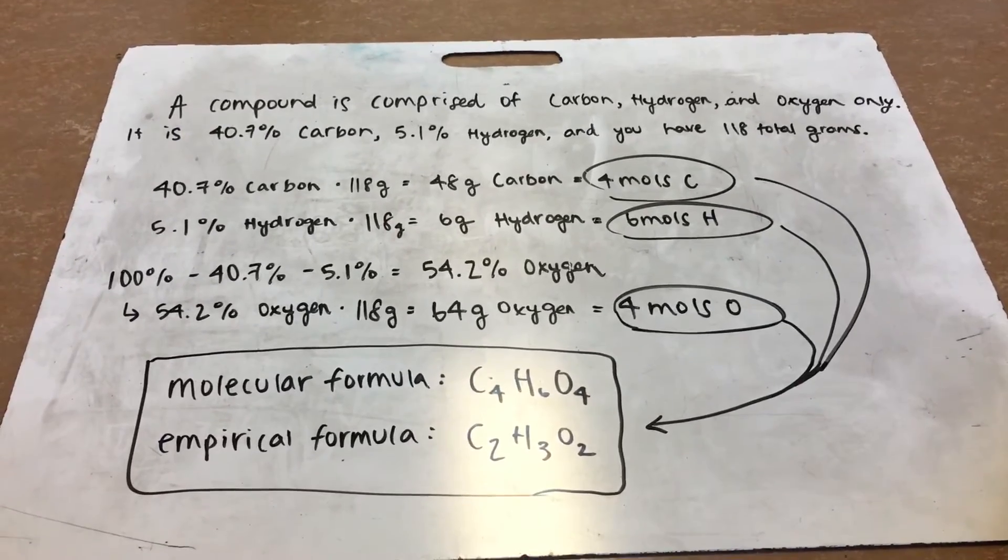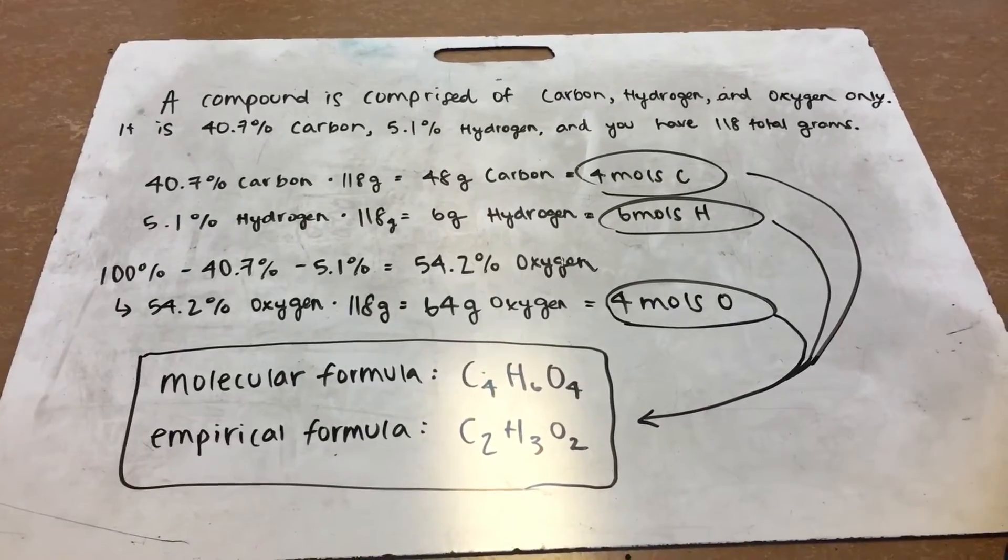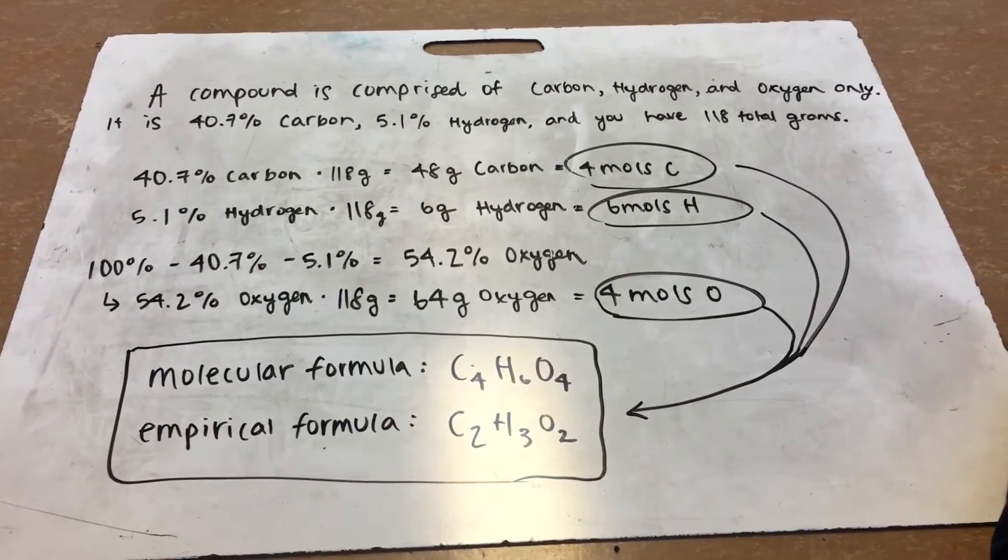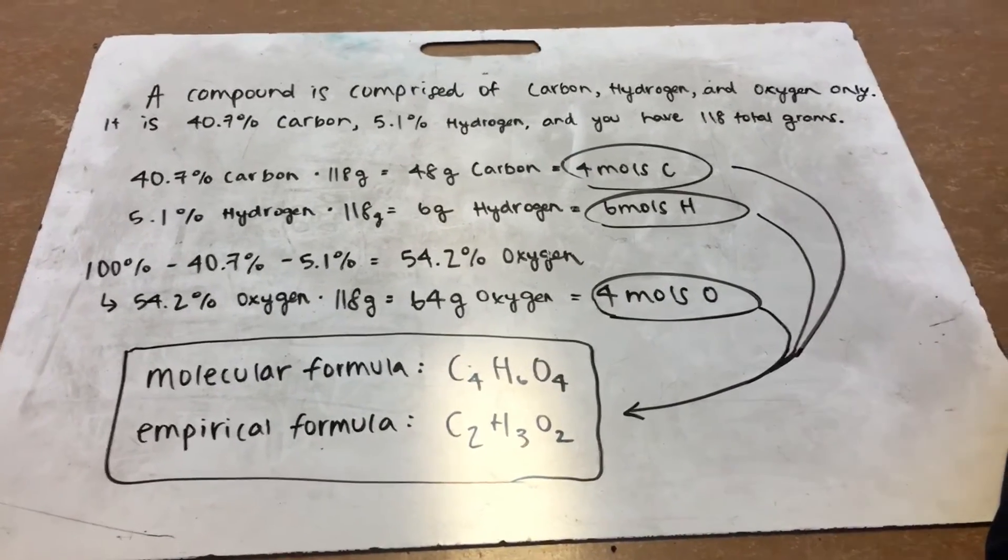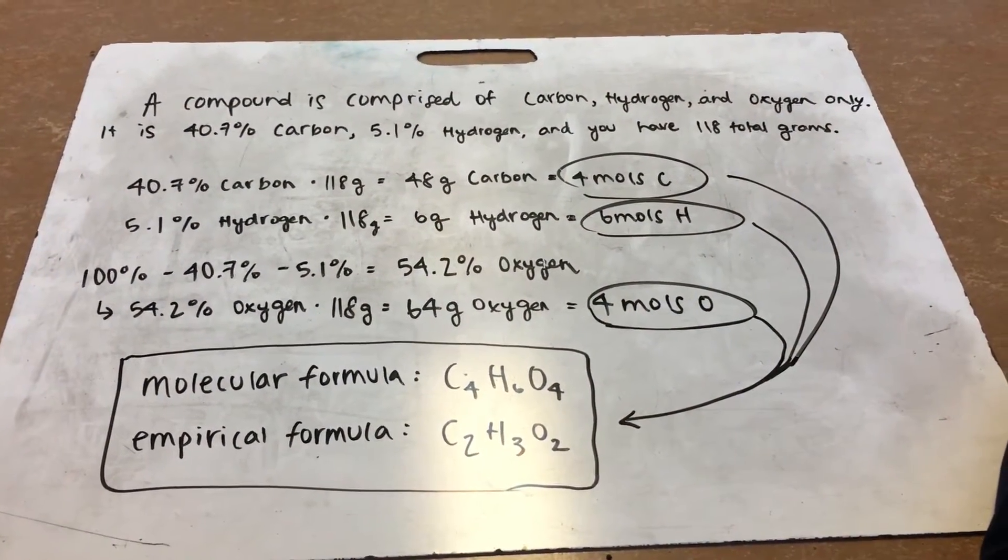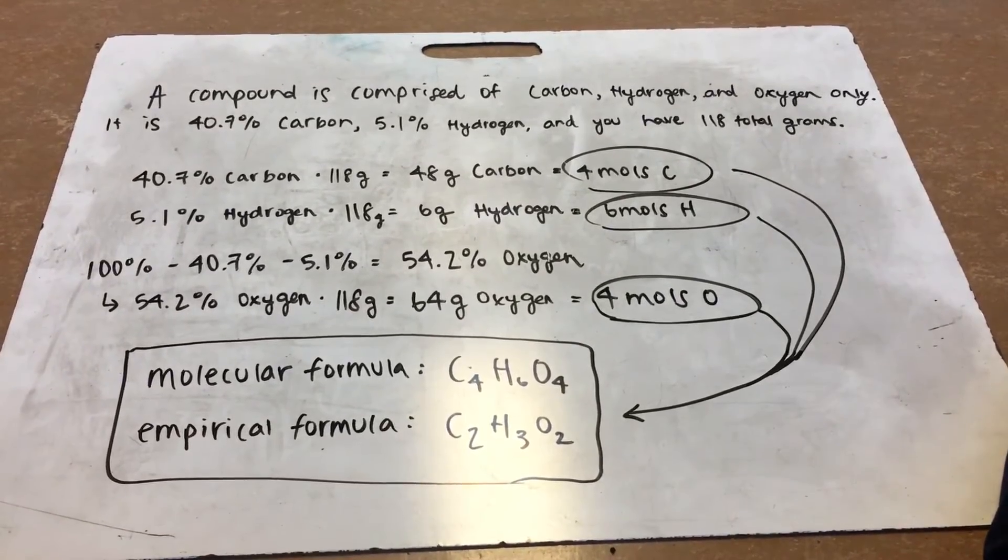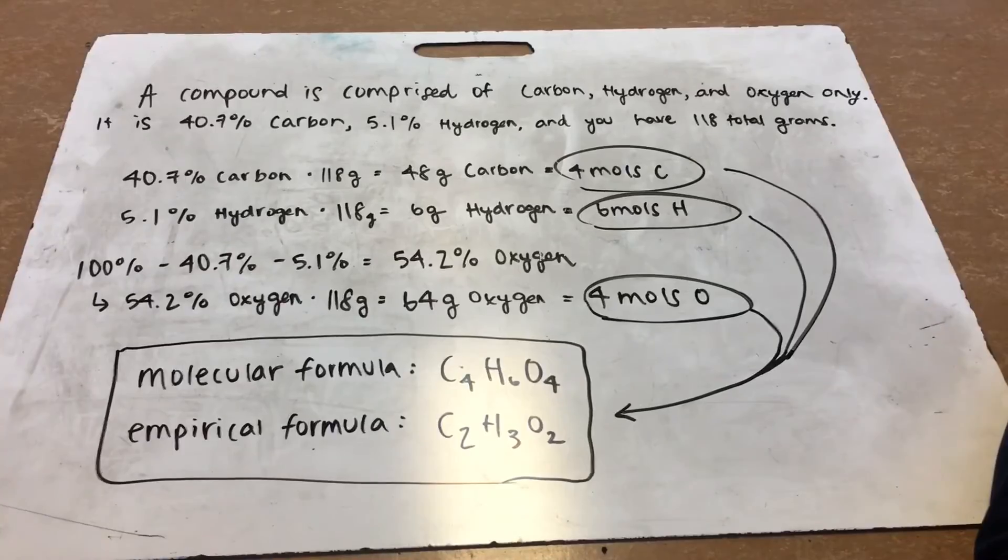So how I would start this problem is if you know that it's 40.7% carbon, you multiply that by the total grams to figure out how many grams of carbon you'd have. So you'd get 48 grams, and then you divide that by the molar mass of carbon, which is 12.01, and you'd get about 4 moles of carbon.